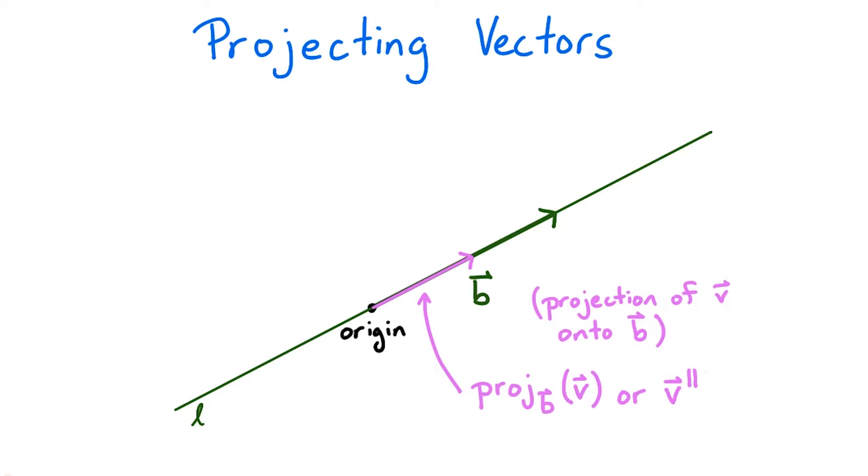This shorter arrow is the projection of v onto b, which we will denote by proj sub b of v, or v with two little bars next to it for short.